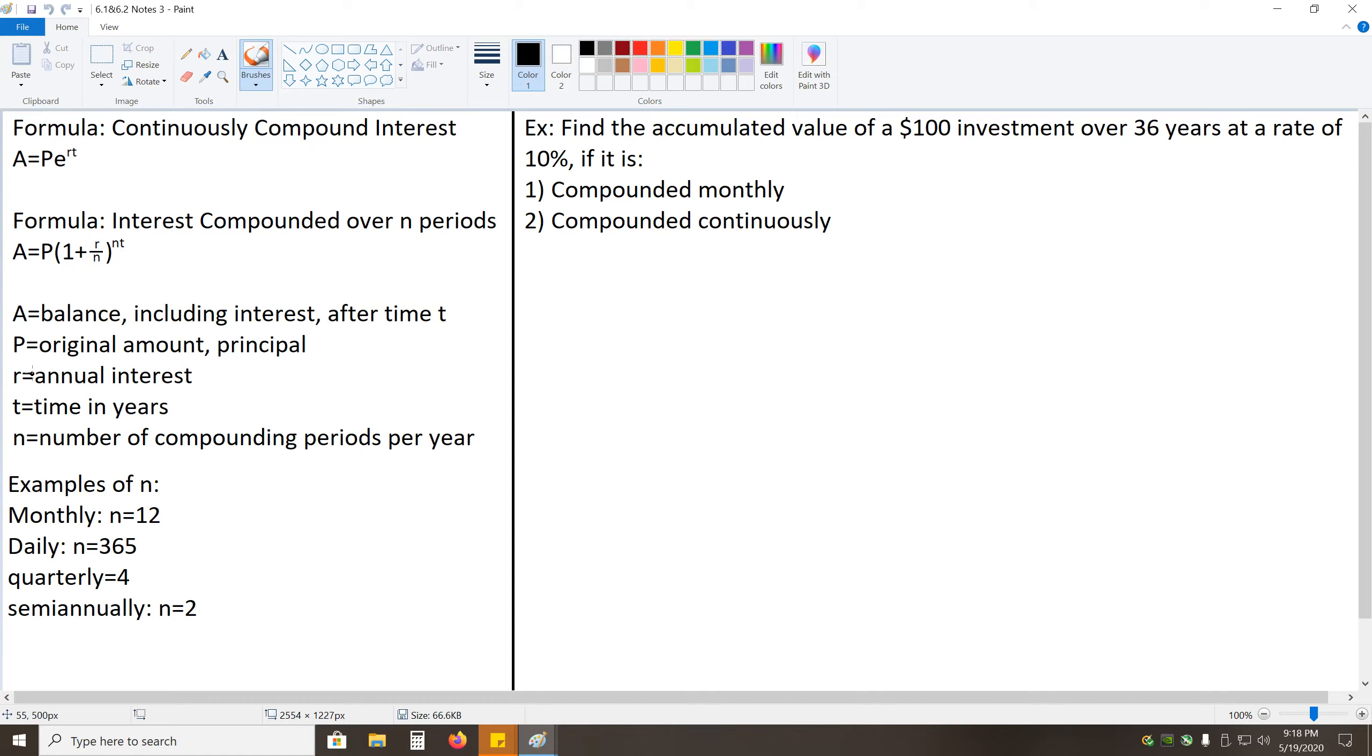And now to go over what these values mean, we say A is the balance including interest after time T. It's the accumulated value. We say P is the original amount, or the principal. R is the annual interest rate. T is the time in years. It is very critical that that number is in years. If it's not, you have to convert it to years. And finally, N is the number of compounding periods per year. So, some examples of N, if it's compounded monthly, then it's compounded 12 times per year.